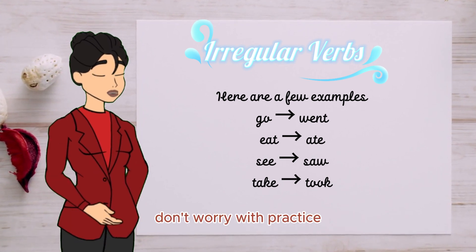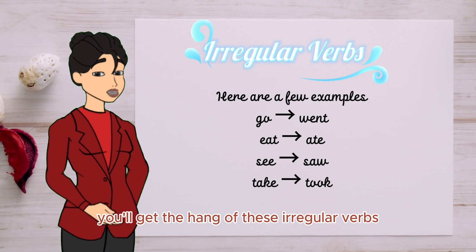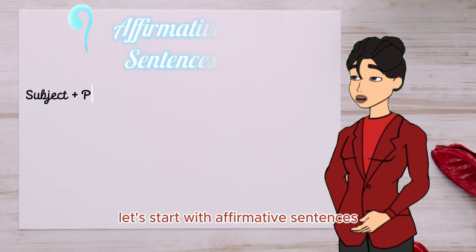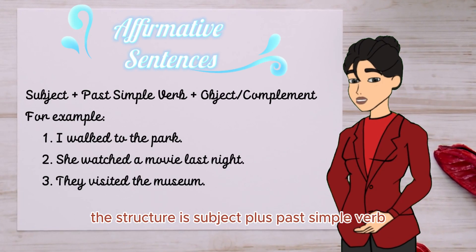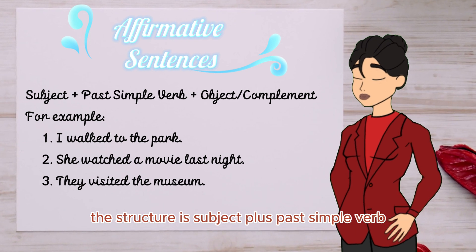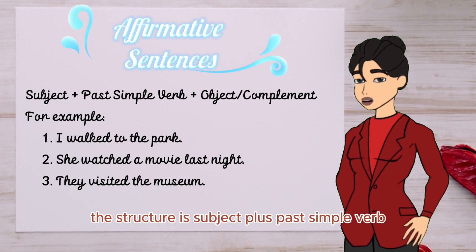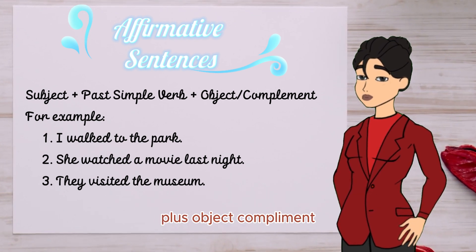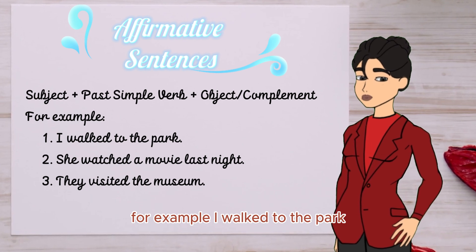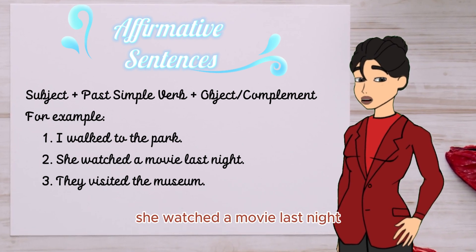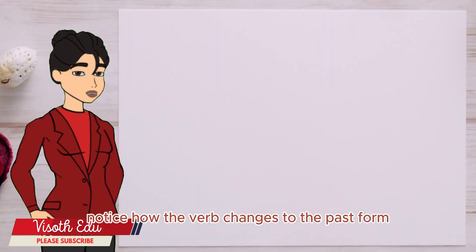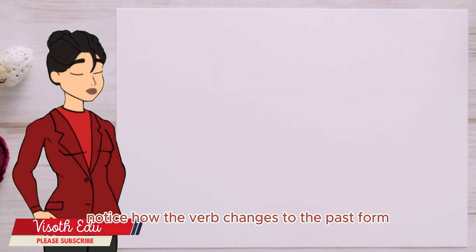Don't worry — with practice, you'll get the hang of these irregular verbs. Let's start with affirmative sentences. The structure is: subject + past simple verb + object/complement. For example: "I walked to the park." "She watched a movie last night." "They visited the museum." Notice how the verb changes to the past form.